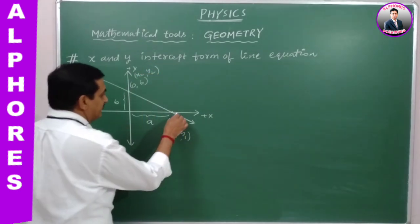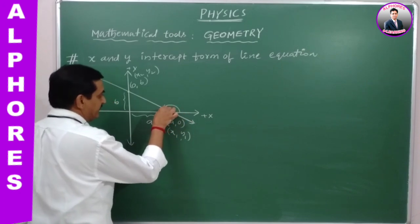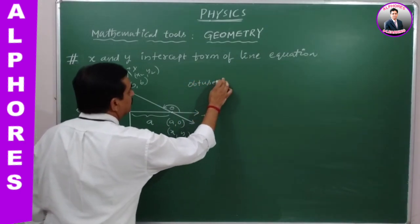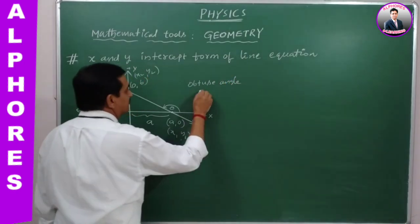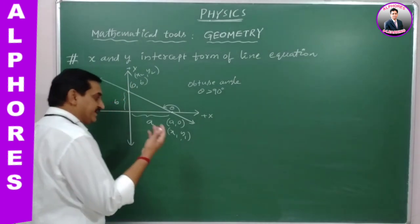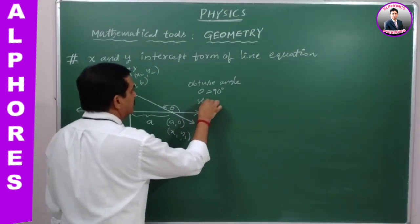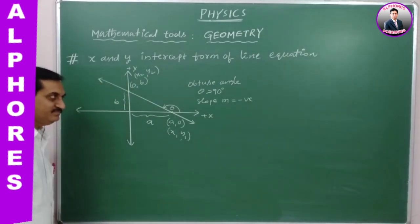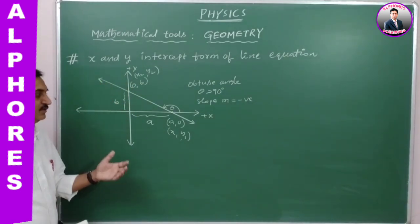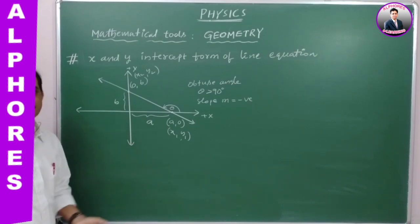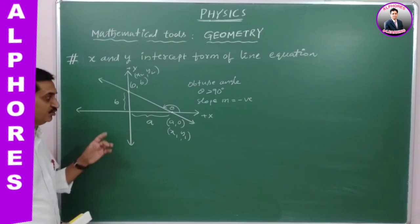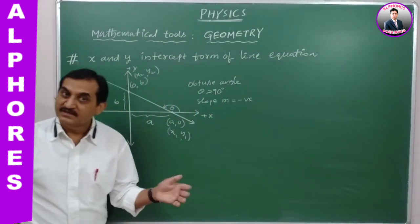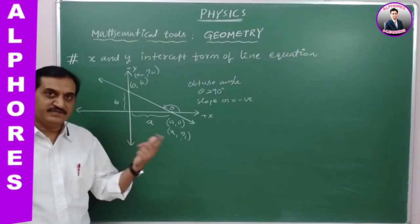Here, the angle made by this straight line with the positive X axis is an obtuse angle — theta greater than 90 degrees. So we can decide that the slope of the line is negative. Let us verify whether slope is negative or positive after finding the equation. By fundamentals we know that if the angle is obtuse, definitely the slope will be negative.